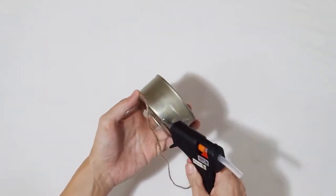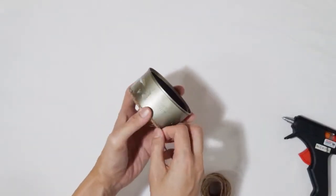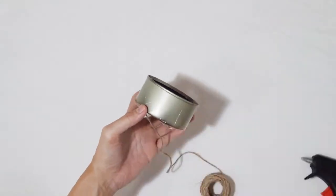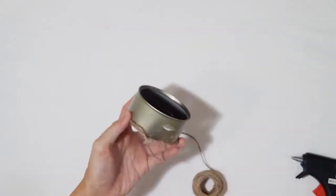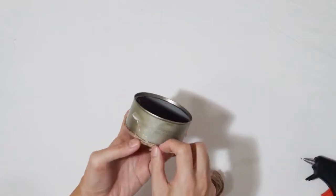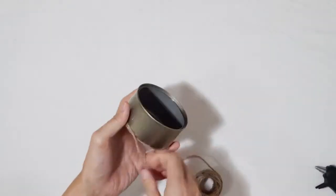This is a very easy DIY. All you need to do is wrap the tuna can with twine. First we need to secure the twine at the bottom part of the tuna can using a glue gun.